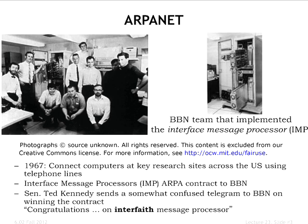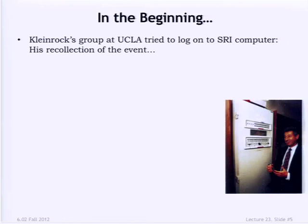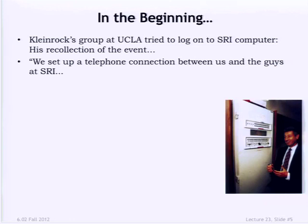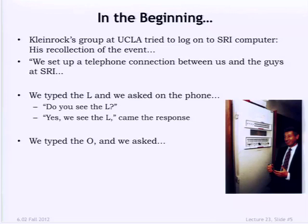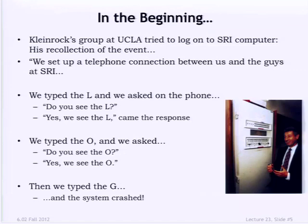In 1969, they connected initially two and then four nodes and had to do the first demonstration. Kleinrock's group at UCLA tried to log in to a computer at SRI in Palo Alto, with a phone connection to check if it was working. They typed the L — 'do you see the L?' 'Yes, we see the L.' They typed the O — 'do you see the O?' 'Yes, we see the O.' And they typed the G, and the system crashed. But they got something working. The most important optimization in a system is going from not working to working.